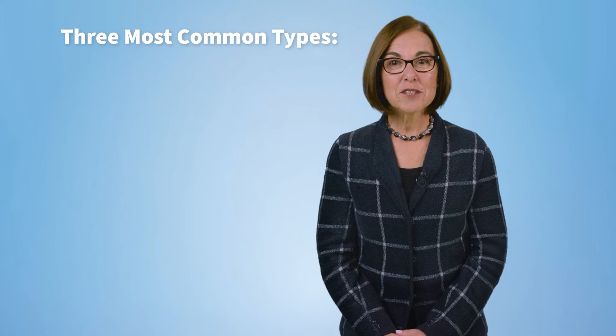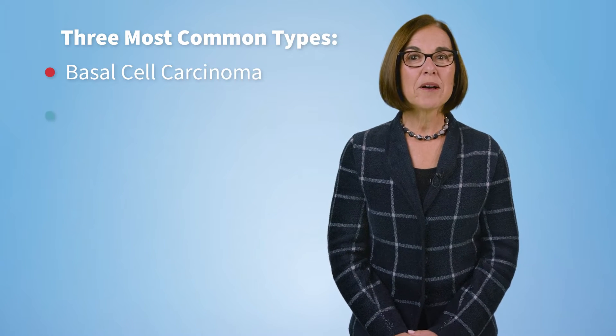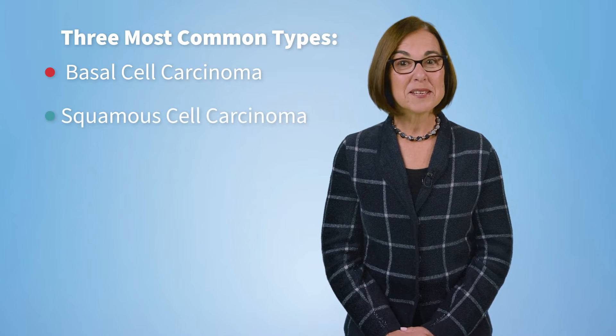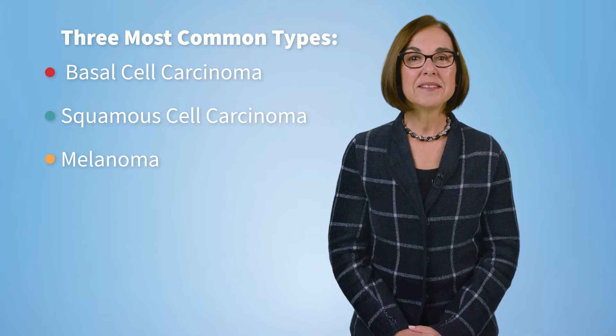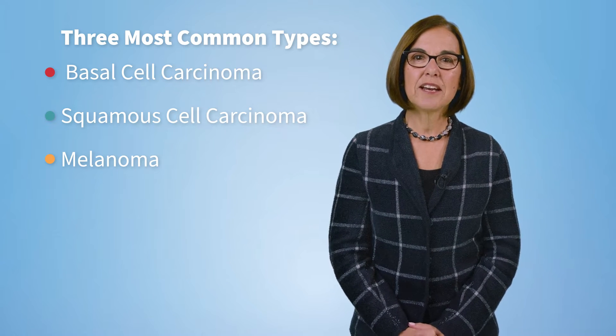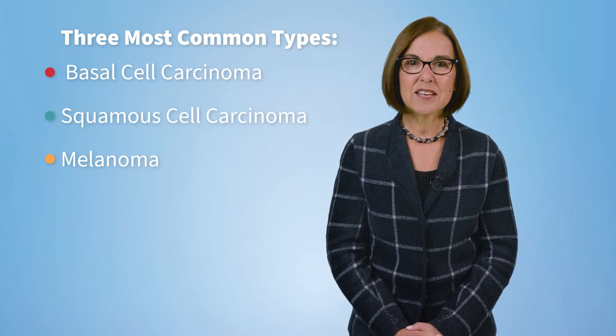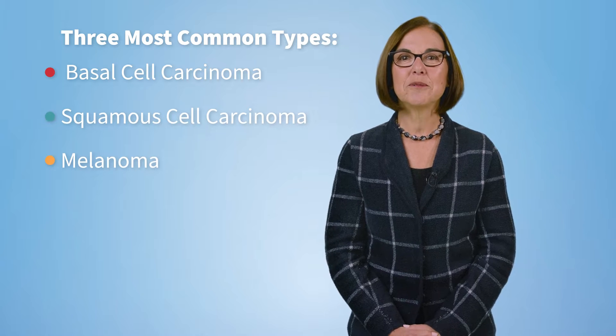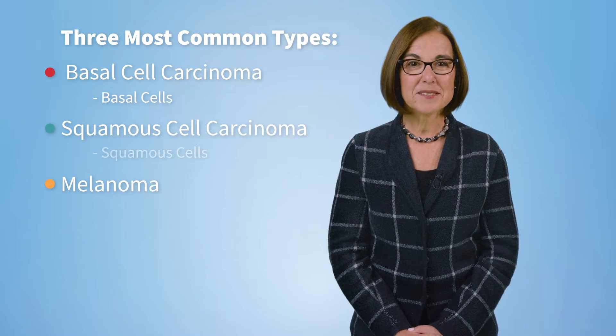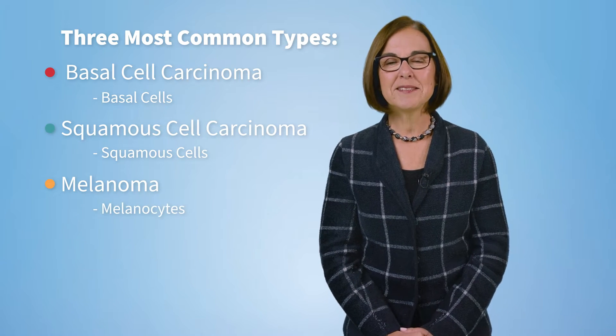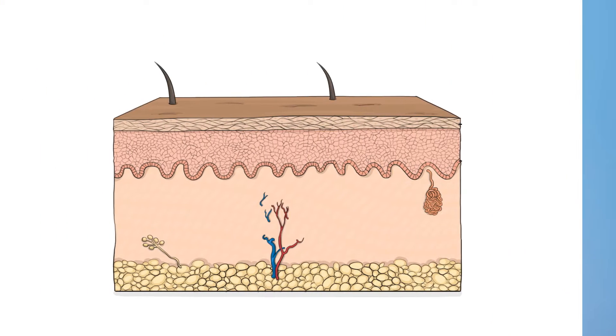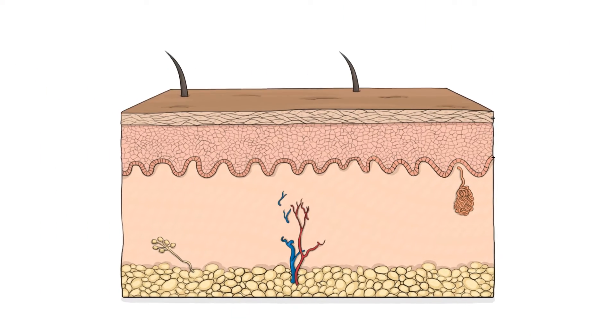Let's start with that first question: What is skin cancer? The reality is that there are actually different types of skin cancer. The three most common are basal cell carcinoma, squamous cell carcinoma, and melanoma. These three types of cancer are named after the specific kinds of cells in which they originate: basal cells, squamous cells, and melanocytes.